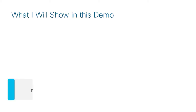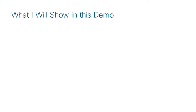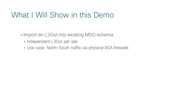In this video I'm going to pick up the baton and show you a demonstration of what it means to connect to the external domain in the context of Multisite Orchestrator. What I'll show in this demo is a couple of simple but interesting things. The first is I'm going to import an existing layer 3 out that's living in my ACI fabrics into an MSO schema.